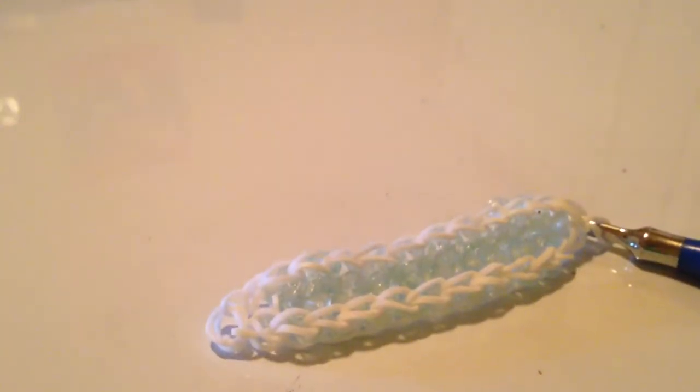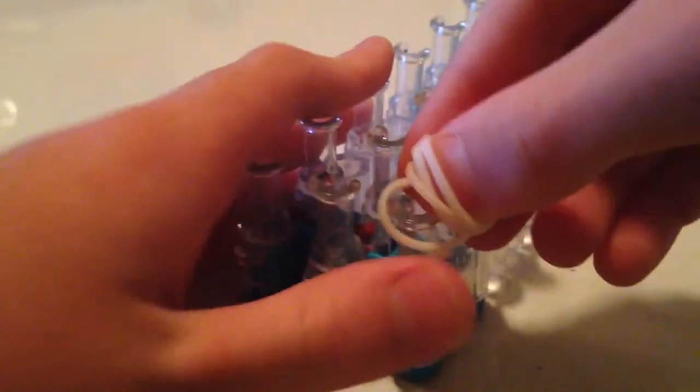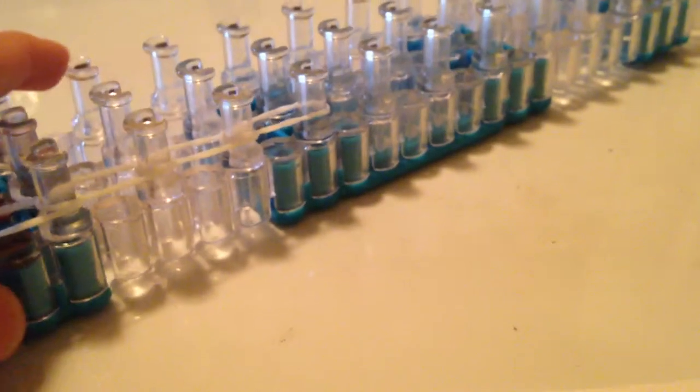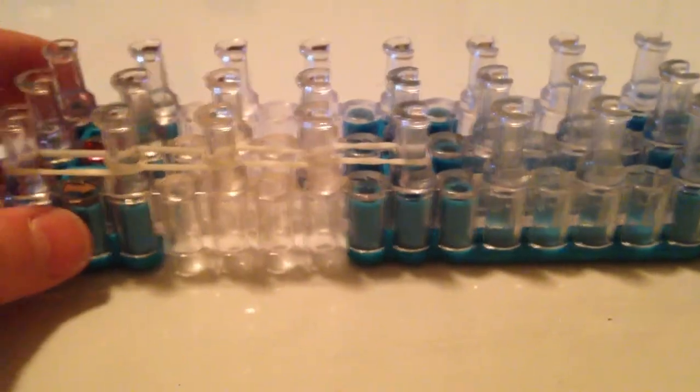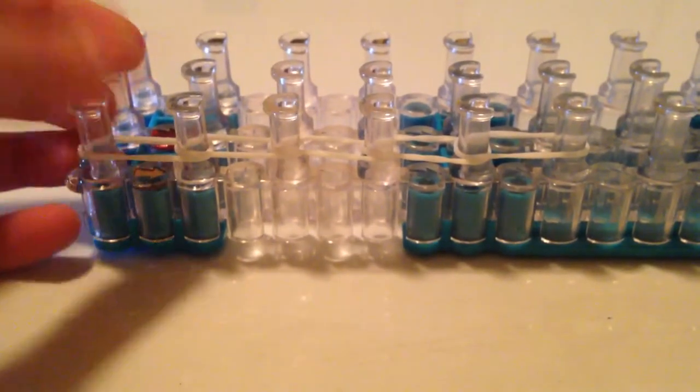Now what you're going to do after you have that, you're just going to set it aside. Then you're going to go to your loom here, and then for my wrist I need ten extensions. I have a pretty small wrist. I do have long fingers. You're just going to go how many links you need for a usual bracelet like the starburst.